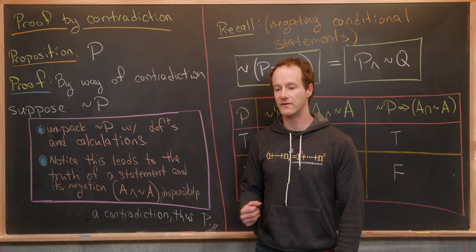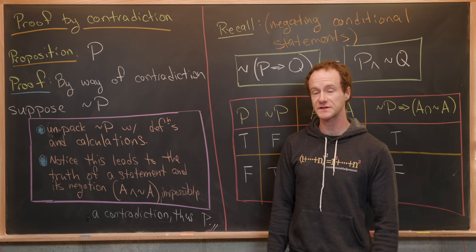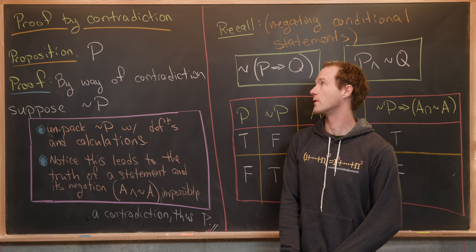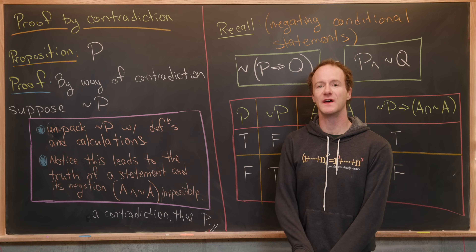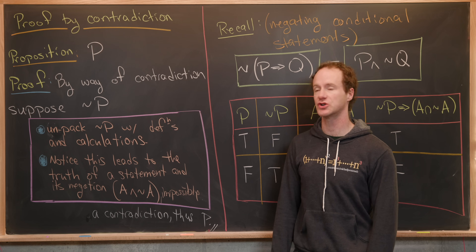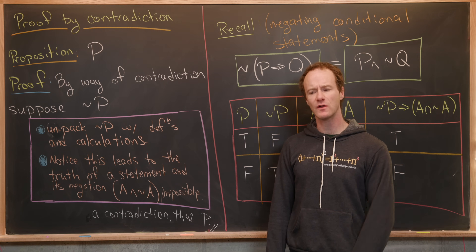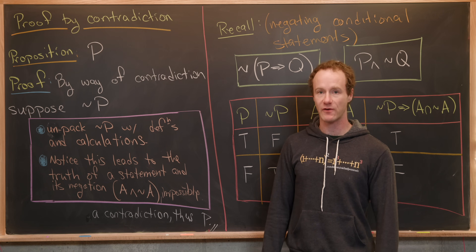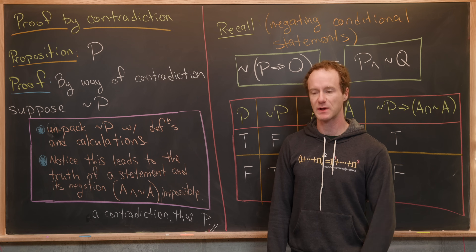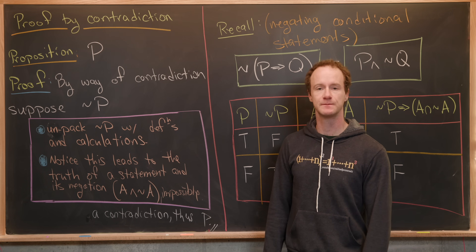This is a continuation of a series related to a course on introductory proof writing. Here we're going to look at the idea of proof by contradiction. We'll look at the basic outline of a proof by contradiction, explain why it works, and then go through a bunch of examples.